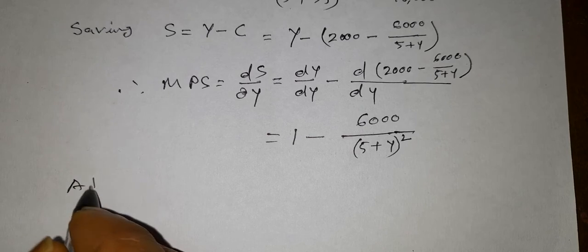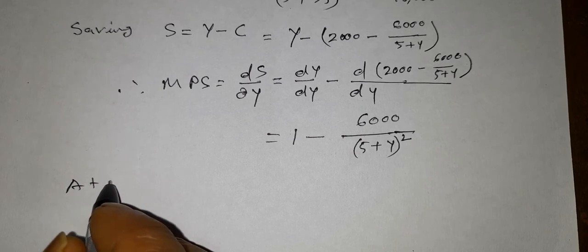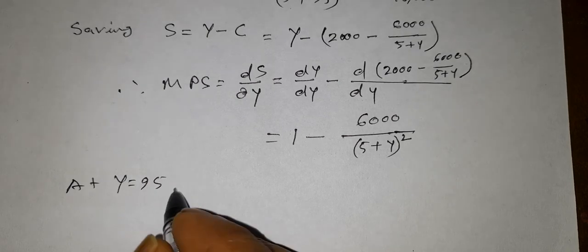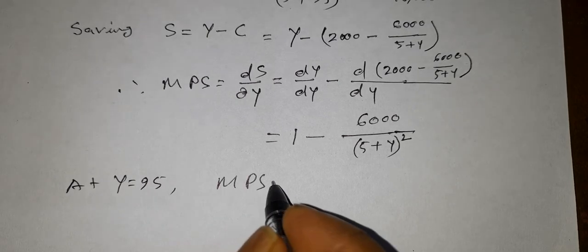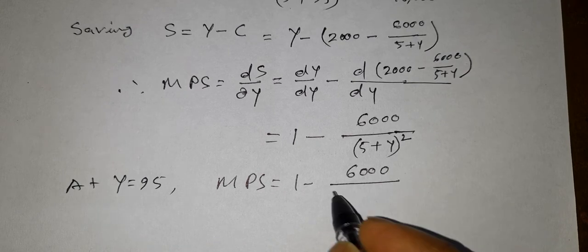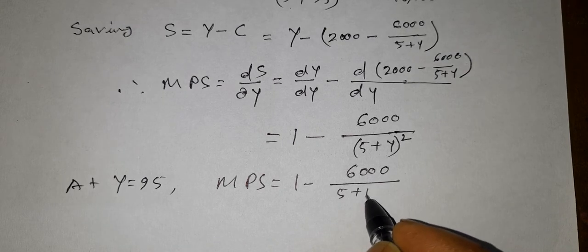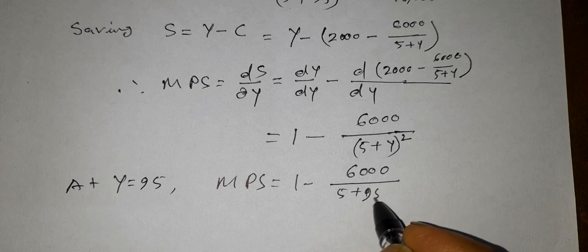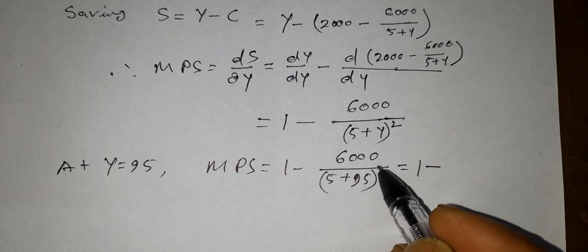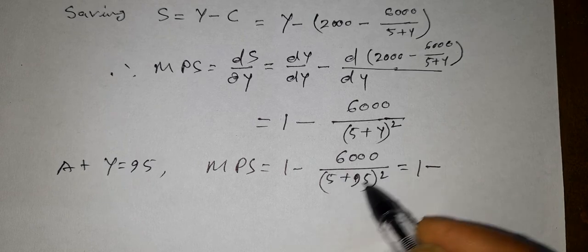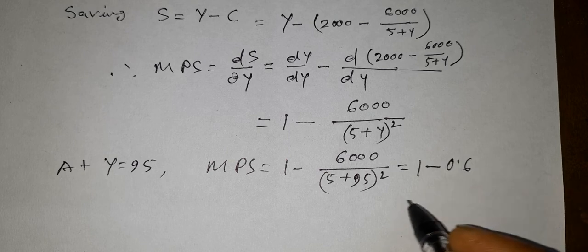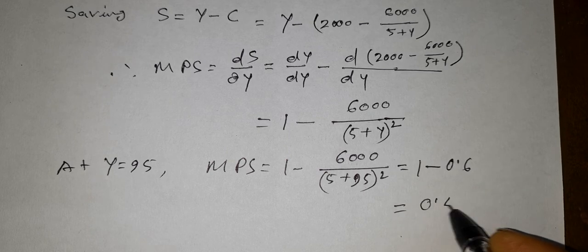At y equals 95, MPS is equal to 1 minus 6000 divided by (5 plus 95) whole square. This equals 1 minus the value we already calculated, which is 0.6. So MPS is found to be 0.4.